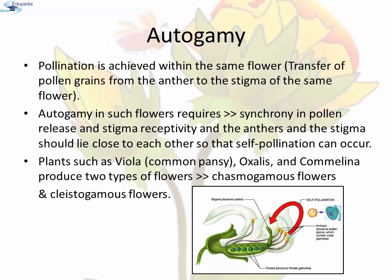Autogamy: In this type, pollination is achieved within the same flower — transfer of pollen grains from anther to the stigma of the same flower. In a normal flower which opens and exposes the anthers and stigma, complete autogamy is rather rare. Autogamy in such flowers requires synchrony in pollen release and stigma receptivity, and the anthers and stigma should lie close to each other so that self-pollination can occur. Some plants such as Viola, Oxalis, and Camelina produce two types of flowers: chasmogamous flowers and cleistogamous flowers.